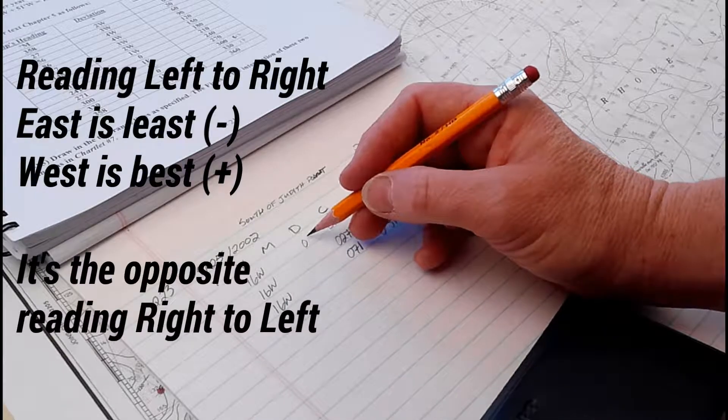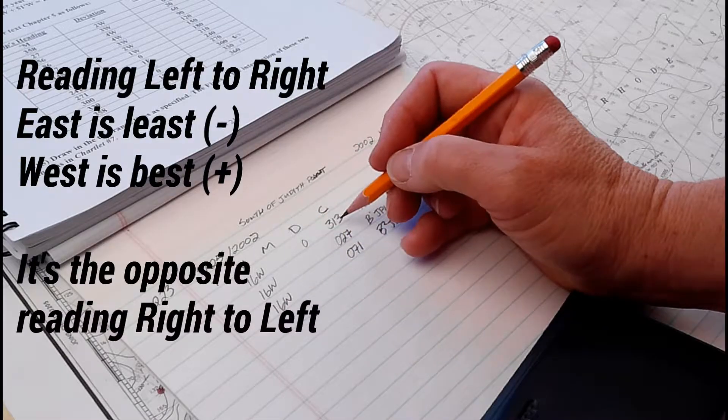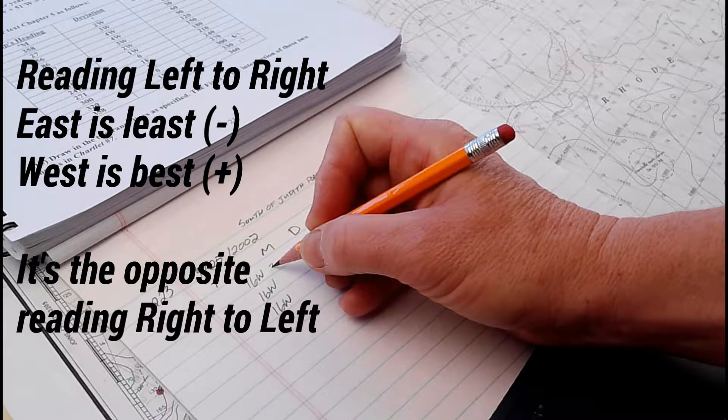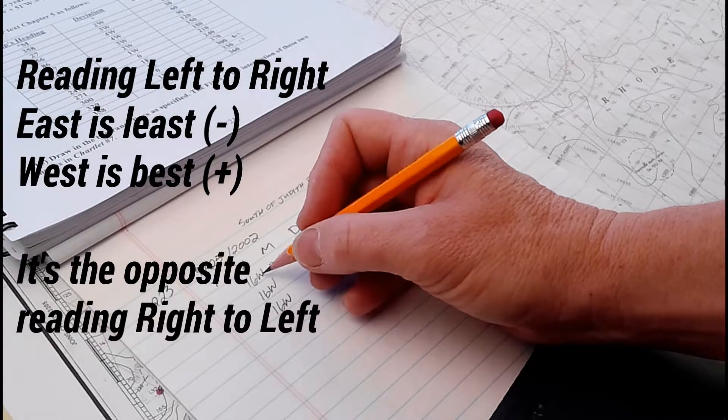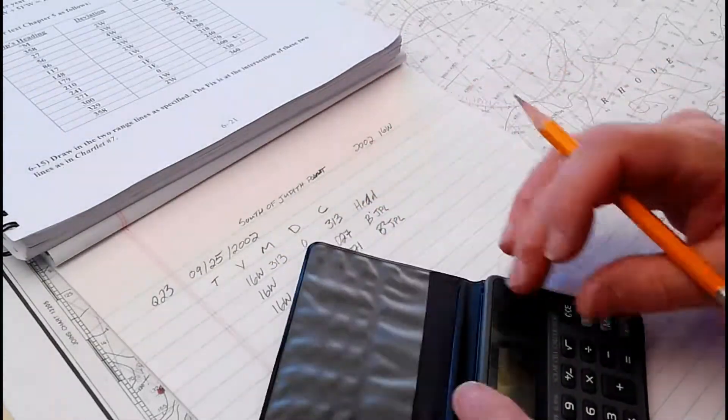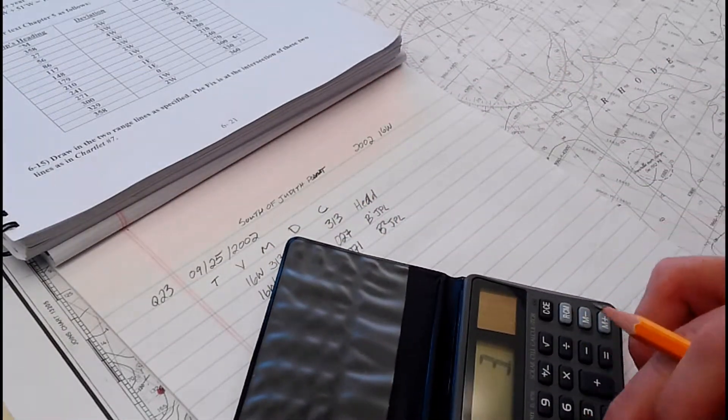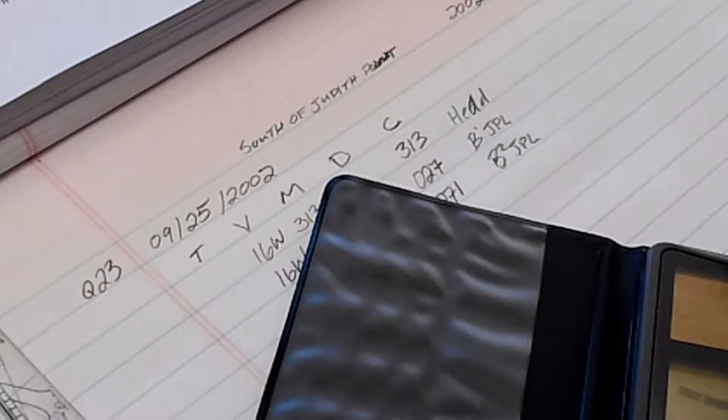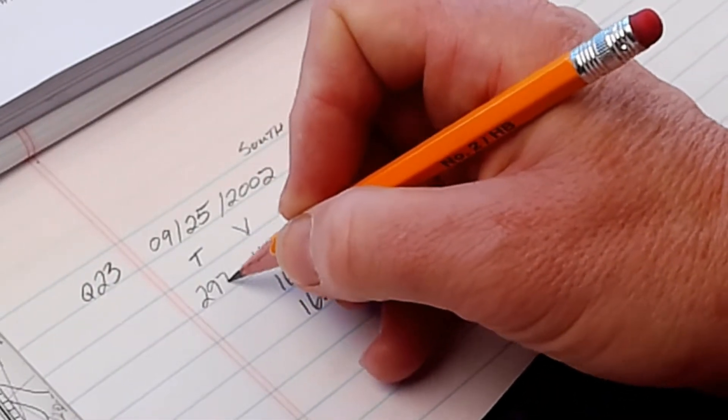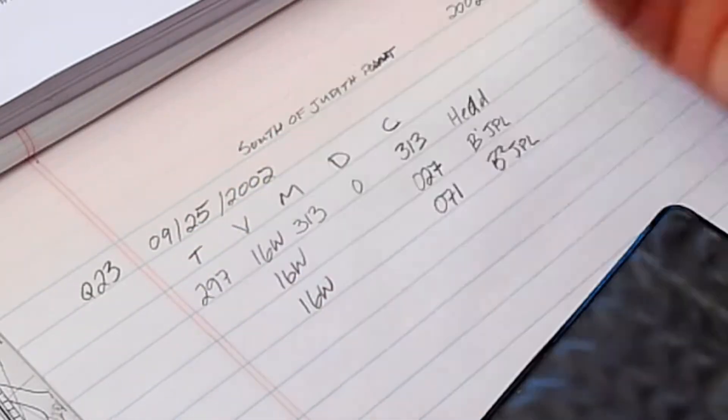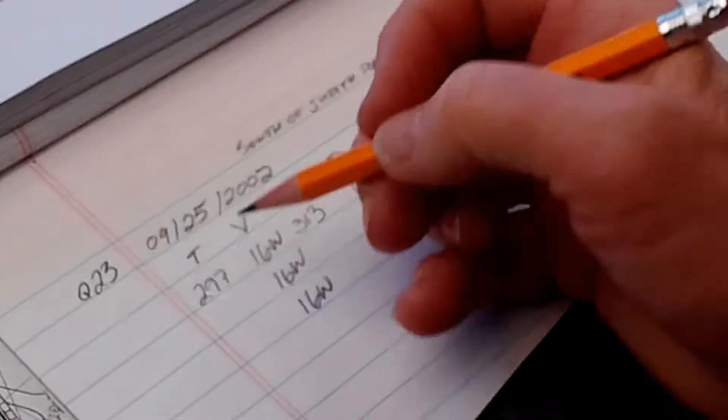No specific concern about east or west or adding and subtracting, so the magnetic is just 313. Going this way with west variation you subtract, so 313 minus 16 equals 297. That's our course to plot, 297 true.